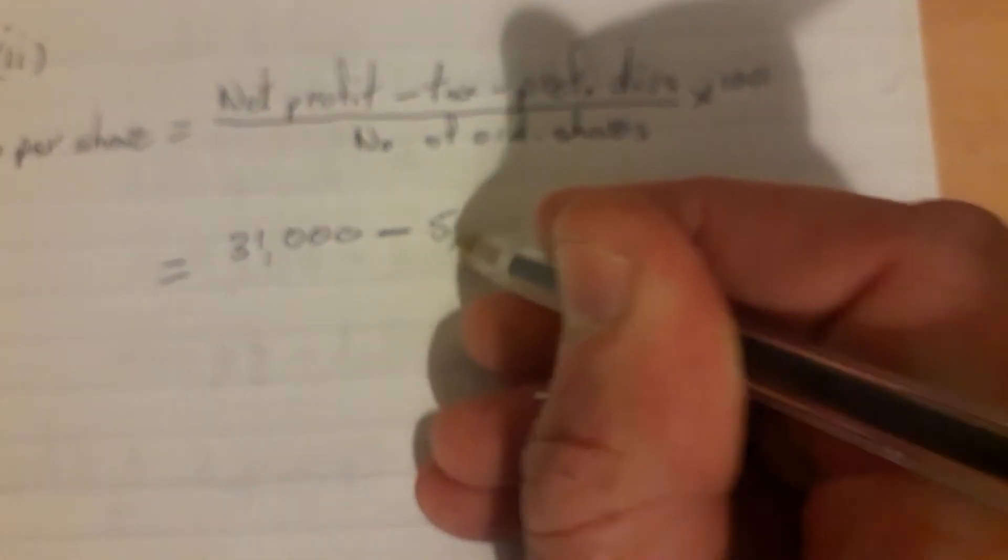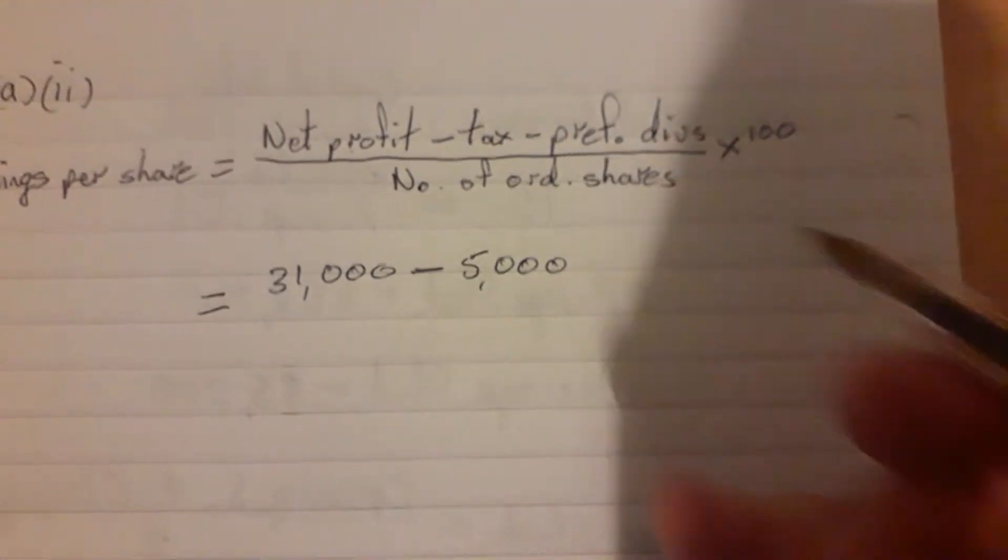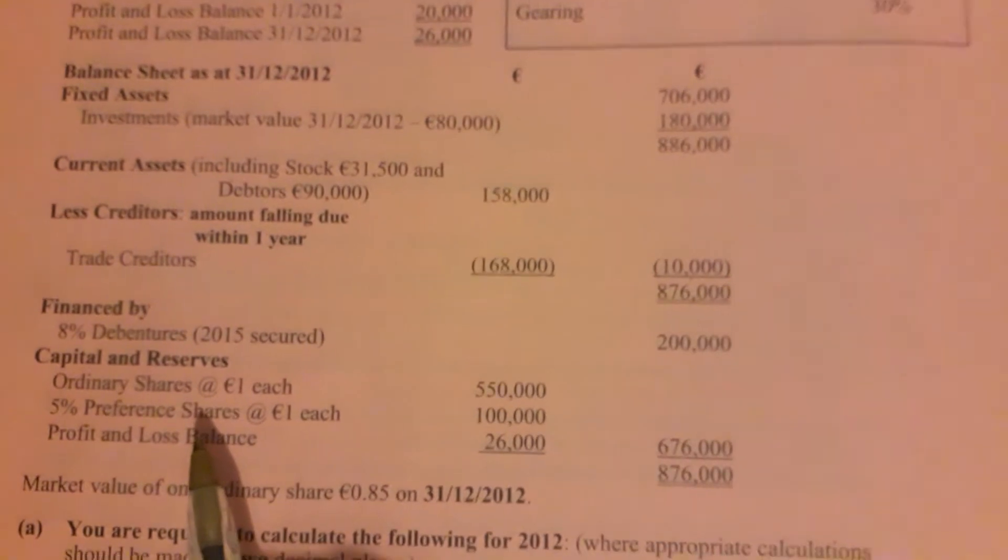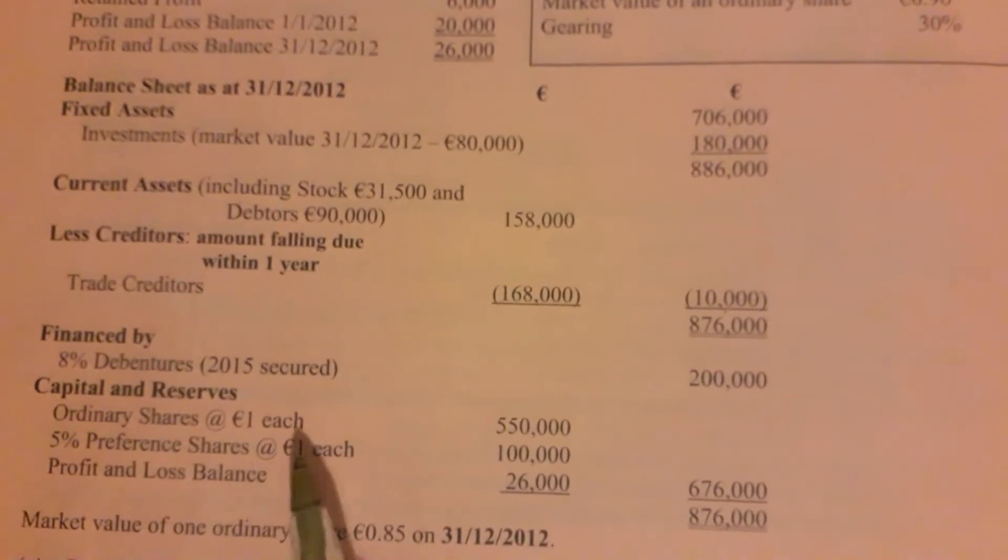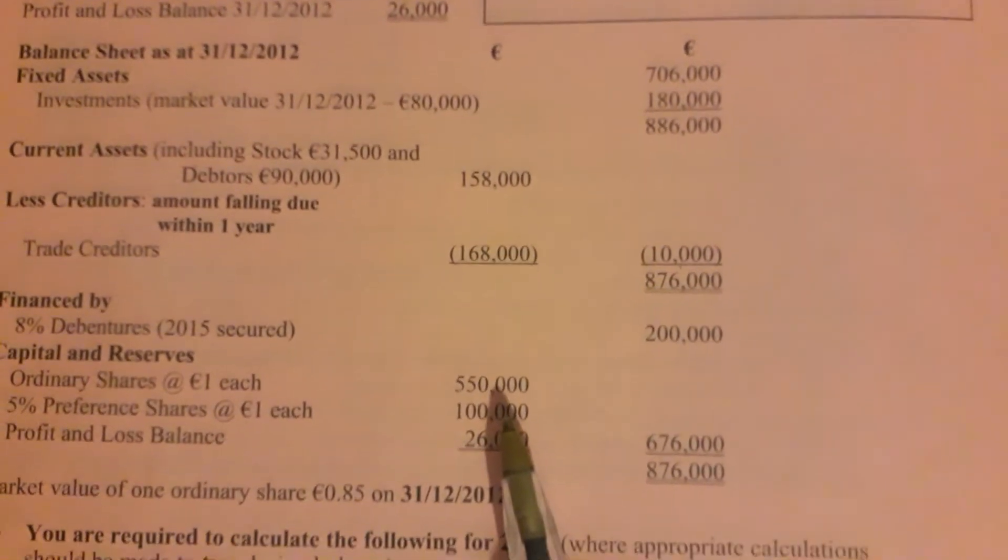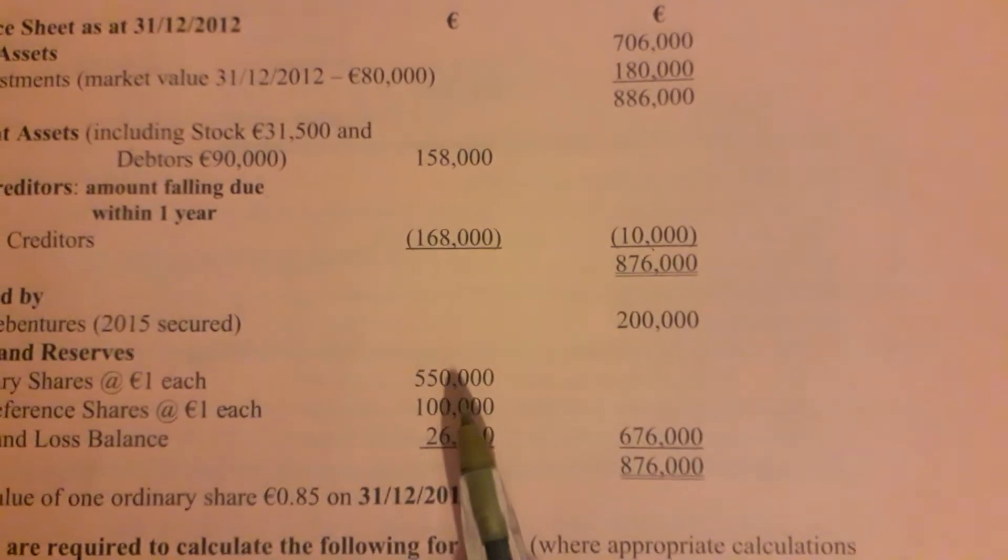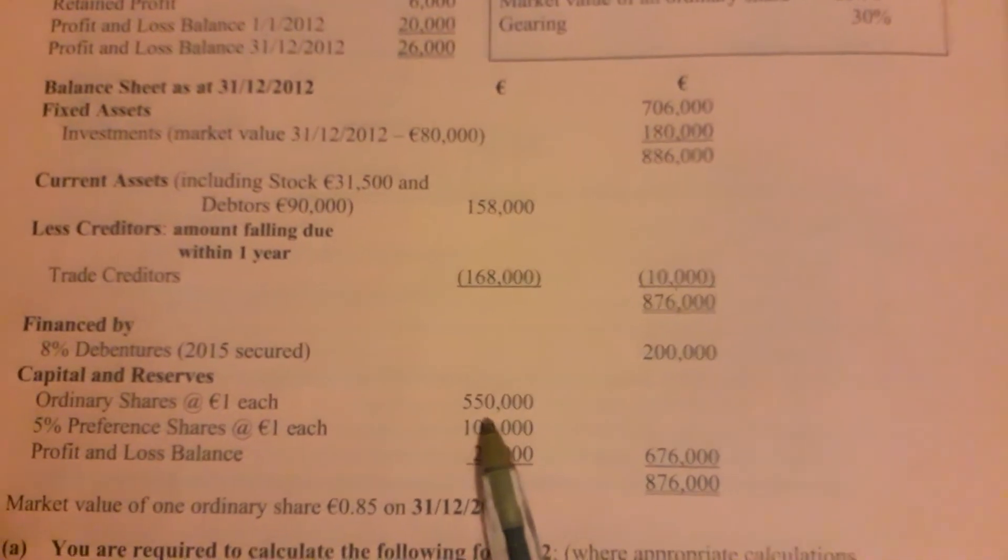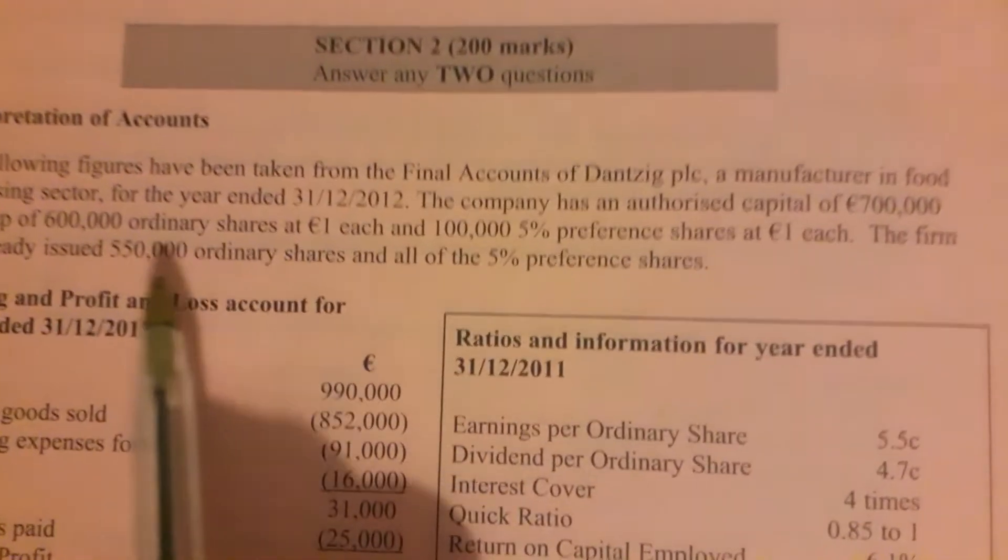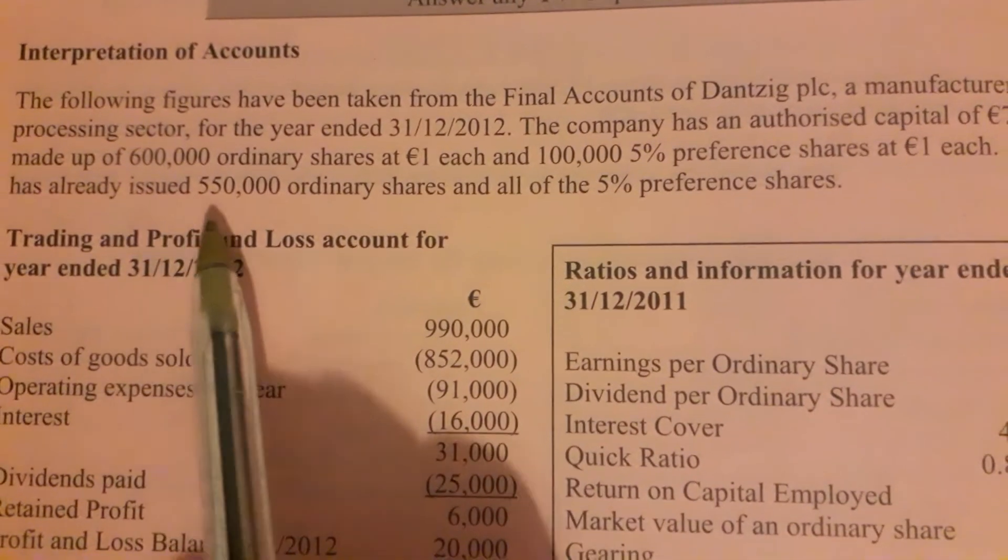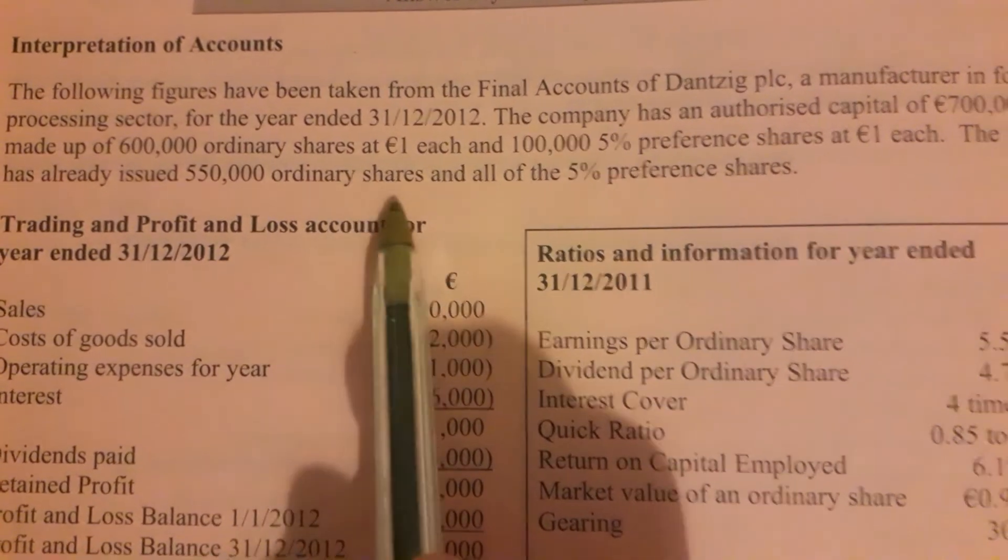So minus preference dividends of five thousand, divided by number of ordinary shares. Again, down here: ordinary shares at one euro each, five hundred and fifty thousand. So it's the number of issued ordinary shares, if we're to be precise about it, not the authorized ordinary shares but issued. So that's 550,000 ordinary shares.